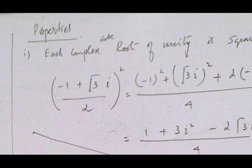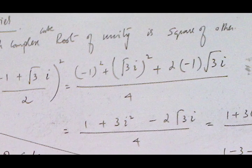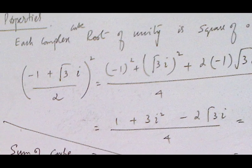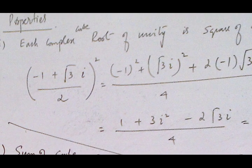Now some properties: each complex cube root of unity is the square of the other. We have one real root (1) and two complex roots which contain iota.